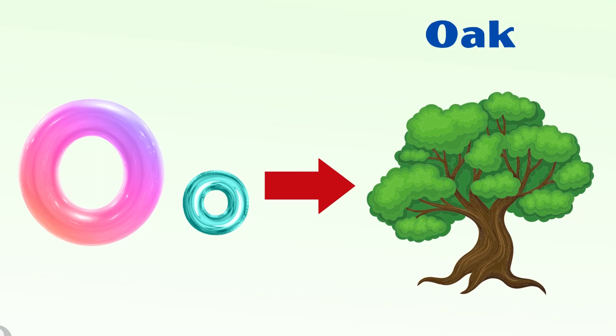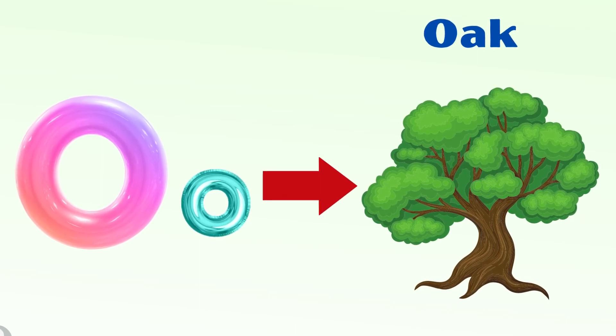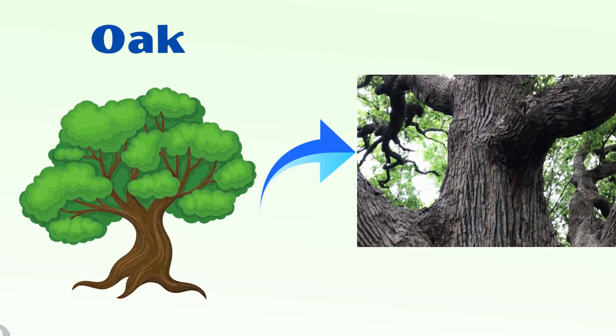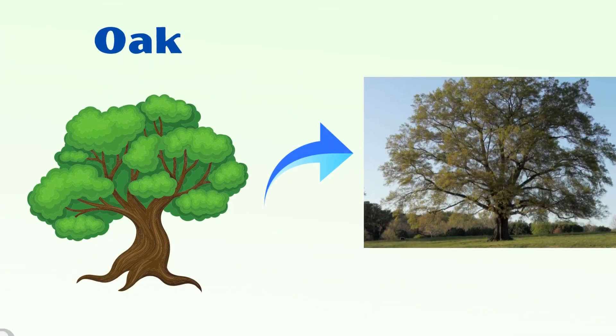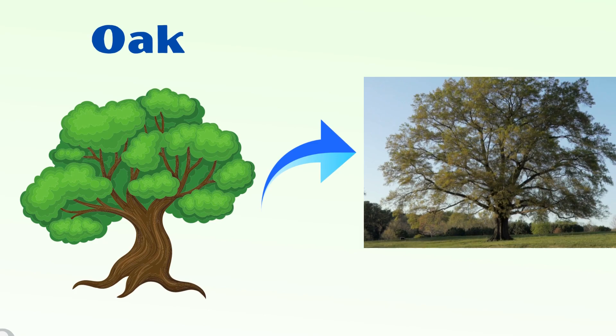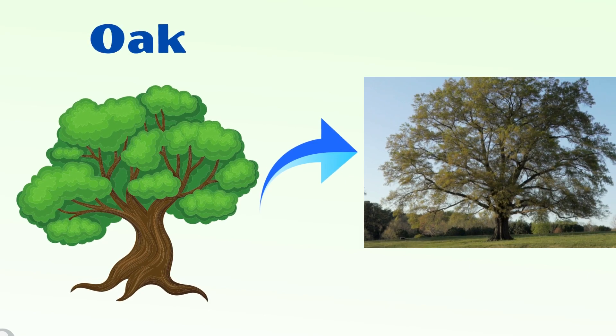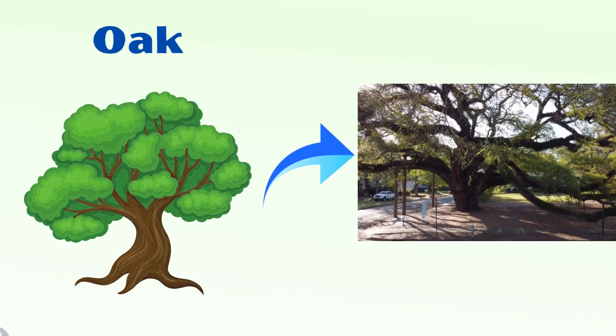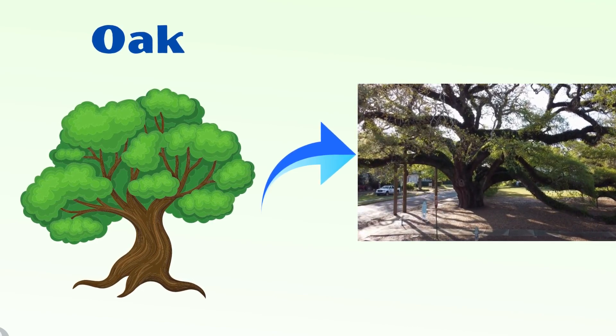O for oak. Oak trees have thick trunks. Oak trees have large branches that spread wide. Oak trees have roots that grow deep underground.